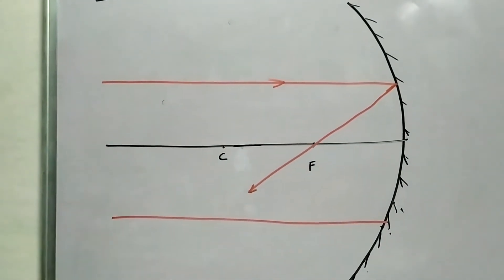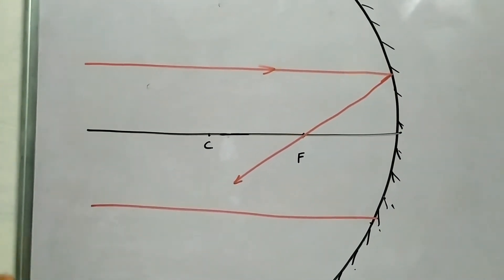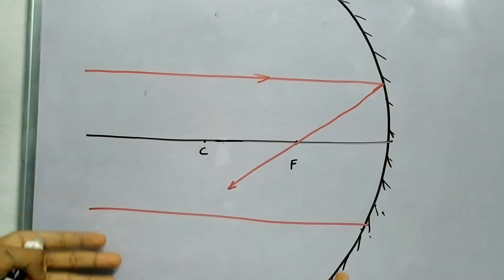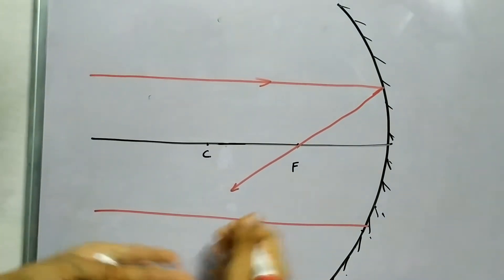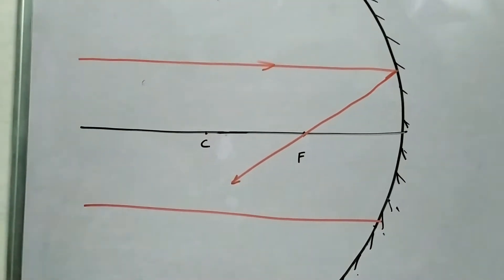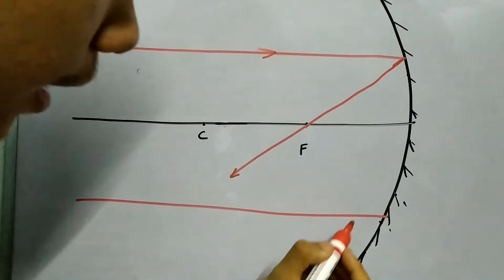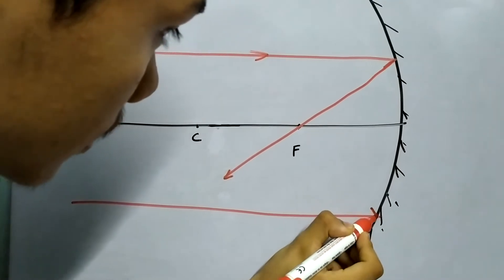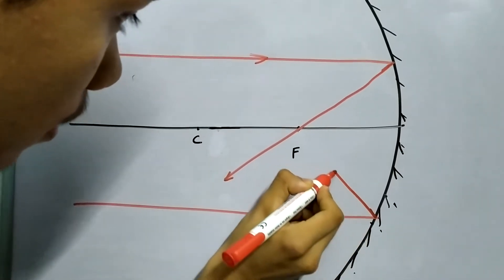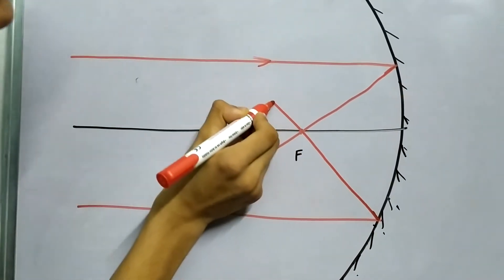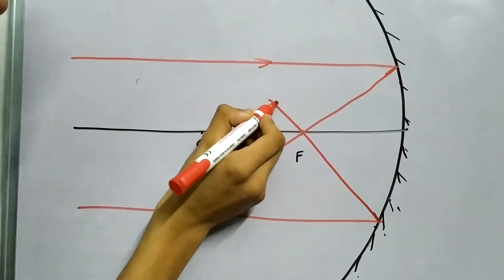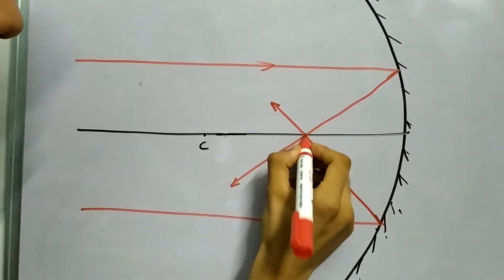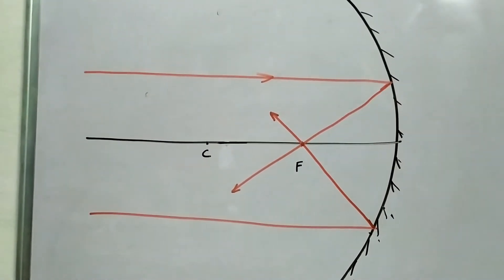And what about this ray? Well, it doesn't really matter if it's above the principal axis or below the principal axis — it just passes through the focus again. So it will do something like this, and this will be the image.